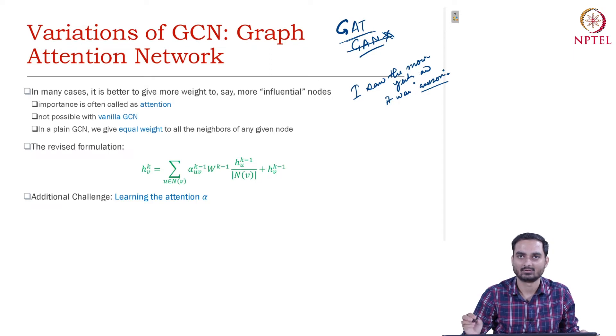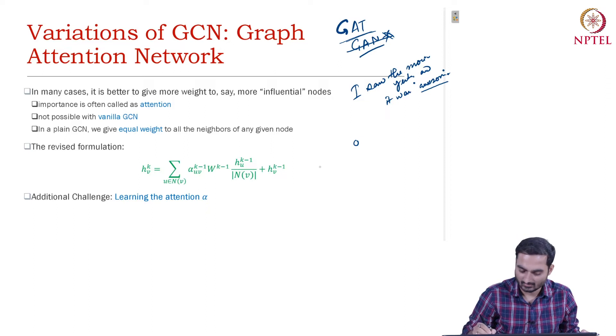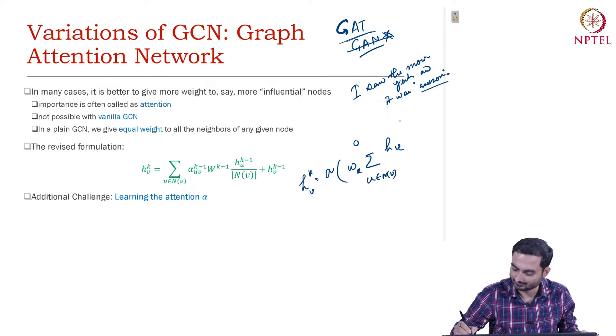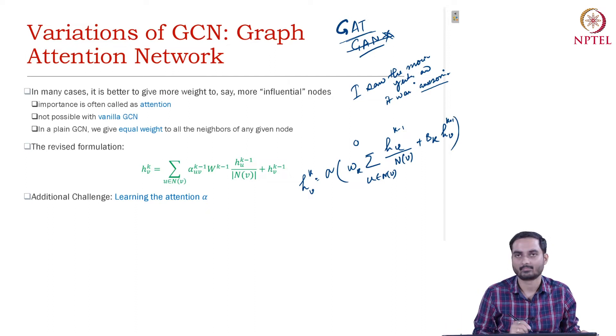Here also, in case of graphs, a graph in a normal GCN paradigm, when you aggregate - so far how we have been aggregating? If you remember the equation: H_v^k is sigmoid of GCN W^k summation of h_u, where u is the neighbor of v, k minus 1, divided by |N_v| plus b^k h_v^{k-1}.